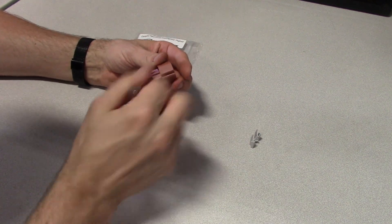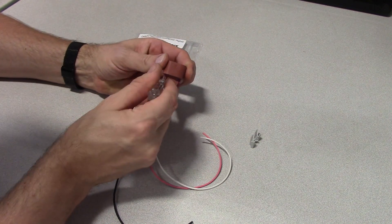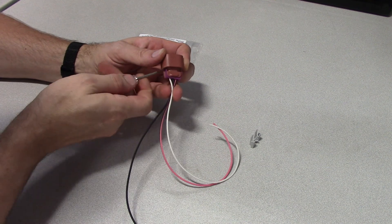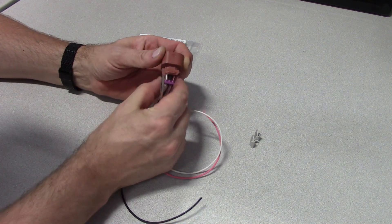And the next part, you want to take this purple seal retainer, just pry that off. Comes right off the wires.